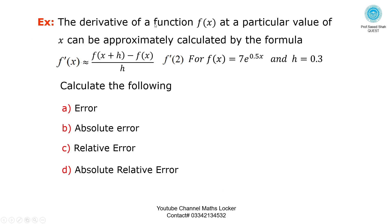The derivative of function f of x at a particular value of x can be approximately calculated by the formula: f dash of x is approximately equal to f of x plus h minus f of x, divided by h. Given f of x equal to 7 times e raised to the power 0.5x, and h equal to 0.3, calculate the error, absolute error, relative error, and absolute relative error.